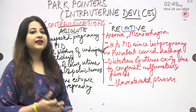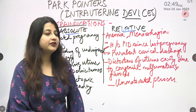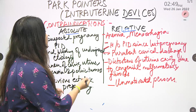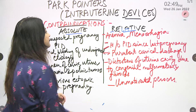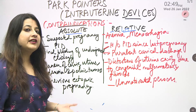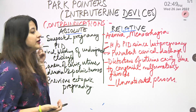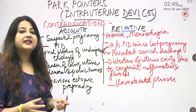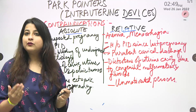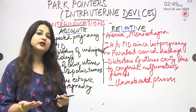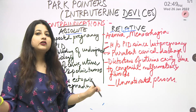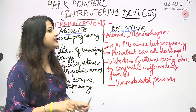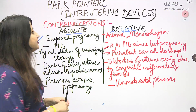Contraindications of intrauterine devices — we are going to see today. If you look over here, they are divided into absolute and relative contraindications. For absolute contraindications, the first one is suspected pregnancy. If you are suspecting a woman to be pregnant, we will not at all insert an intrauterine device.